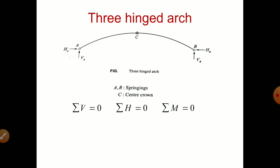In case of three-hinged arch, we can have three equations: sum of all vertical forces equal to zero, sum of all horizontal forces equal to zero, and sum of moments equal to zero. A and B supports are called springings and C is called center crown. All three are hinged.